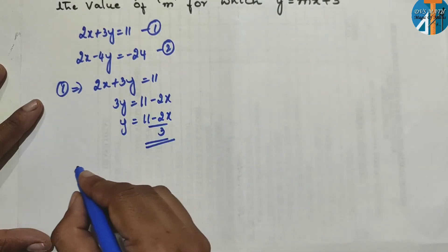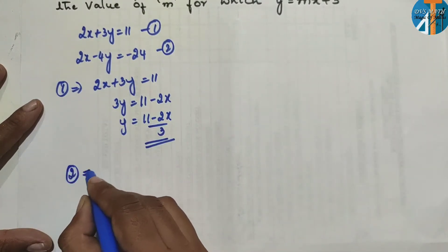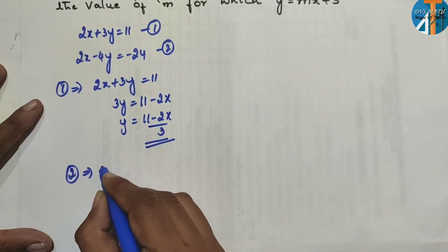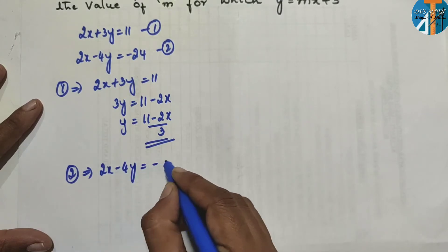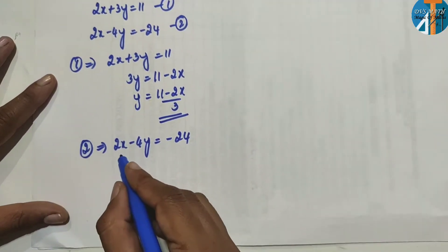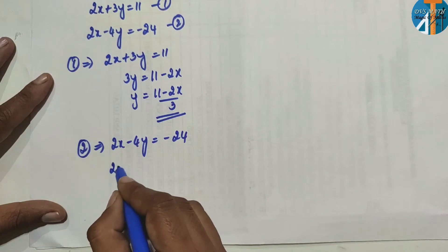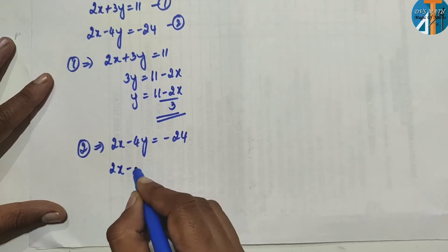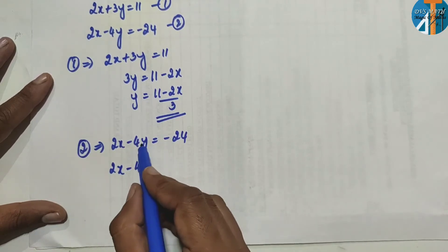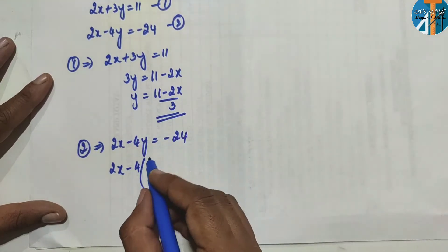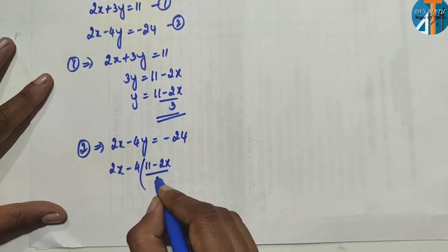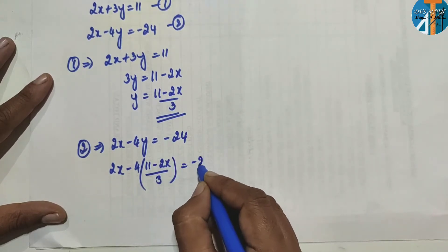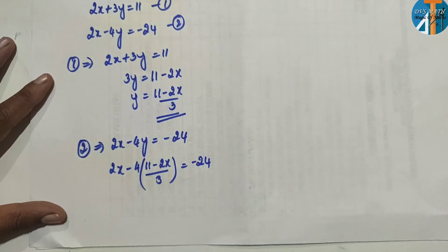Now considering equation 2: 2x − 4y = −24. In place of y, let us substitute (11 − 2x) / 3. So we have 2x − 4 × (11 − 2x)/3 = −24.